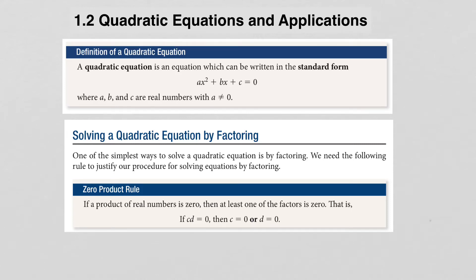In section 1.2, we look at quadratic equations and applications. To put it simply, a quadratic equation is a second-degree equation. The definition is here: a quadratic equation can be written in the form ax squared plus bx plus c equals 0, where a, b, and c are real numbers, and the number a cannot be 0.